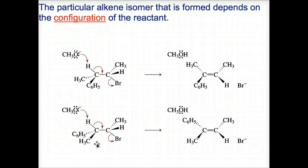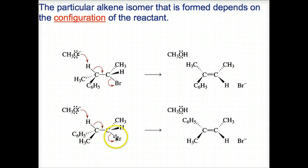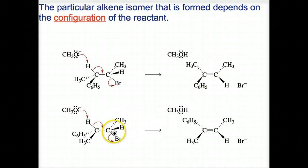The hydrogen and bromine are on opposite sides of the carbon-carbon bond, so that's why we call it anti. Notice where they're positioned in both the first and second examples. So the particular alkene isomer that's formed depends on the configuration of the reactant. The first reaction was 2S,3S, and the second was 2S,3R. It is 3S that results in the E isomer, whereas in the second example, 3R results in the Z isomer.